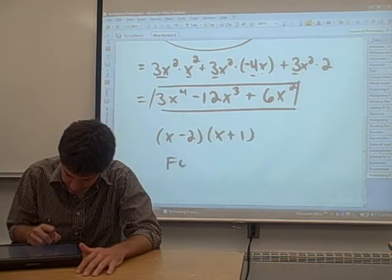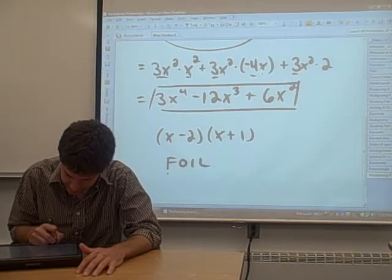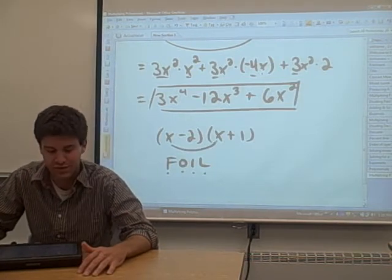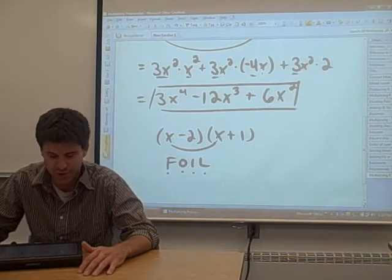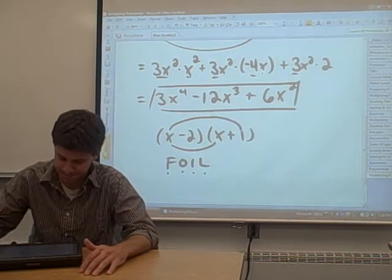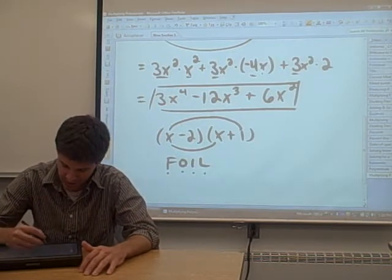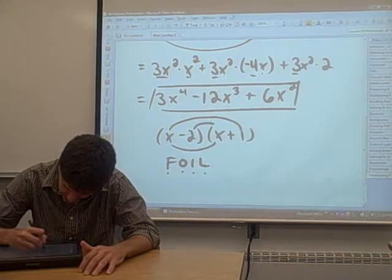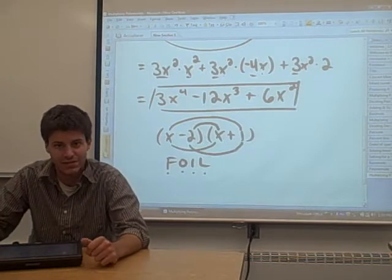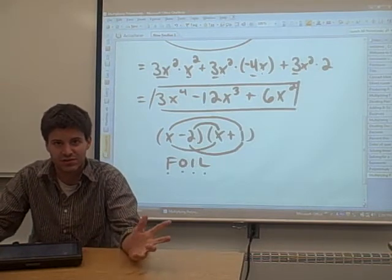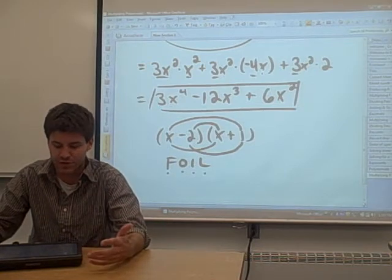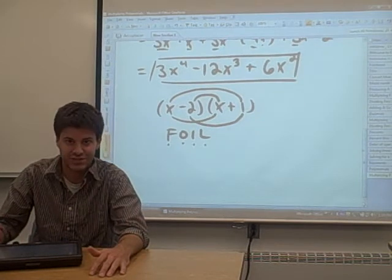FOIL refers to first, outer, inner, and last. Basically, what you do is you take the first two terms, in this case the two x's, you multiply those together. You take the outer two terms for O and you multiply those two together. You take the inner two terms for I, multiply those together, and then you take the last two terms for the L and multiply those together. You take all those results, you add them together. If there are like terms, of course, you combine those like terms and then you're finished.